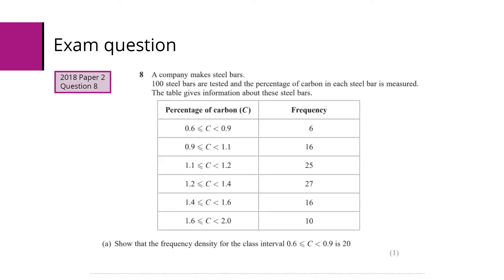Here's an example of an exam question. It says a company makes steel bars, 100 steel bars are tested, and the percentage of carbon in each steel bar is measured. The table gives information about these steel bars, and there's a grouped frequency table, so percentage of carbon on the left with frequencies on the right hand side.